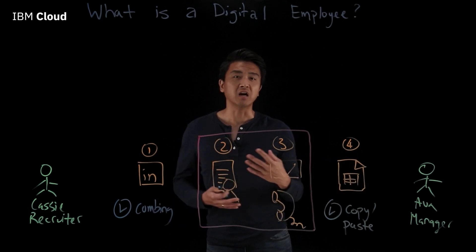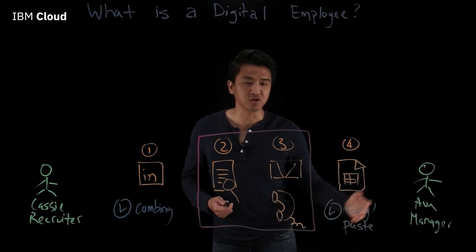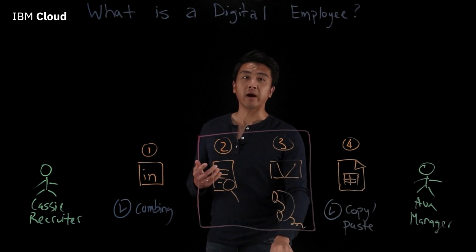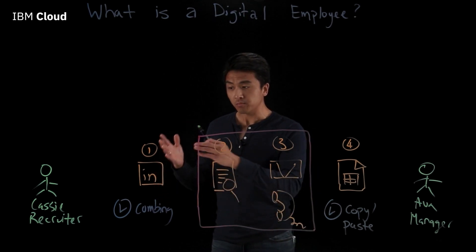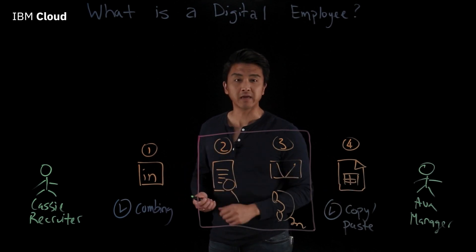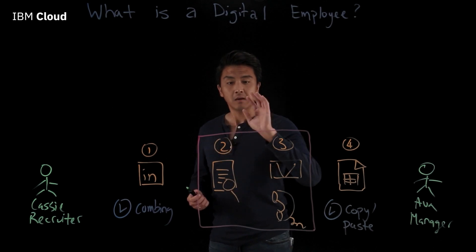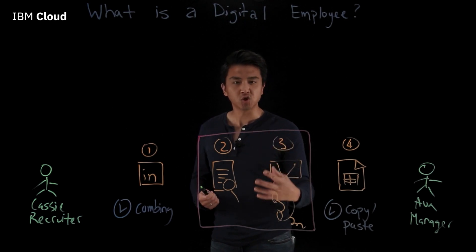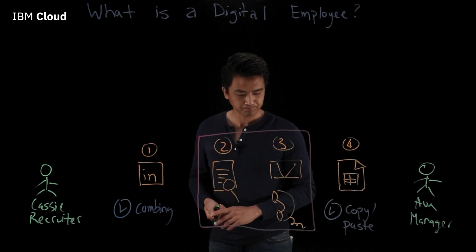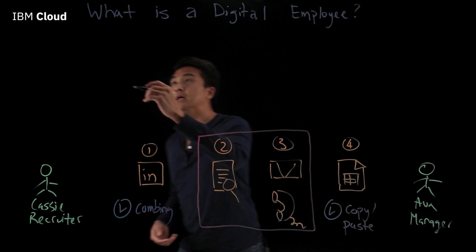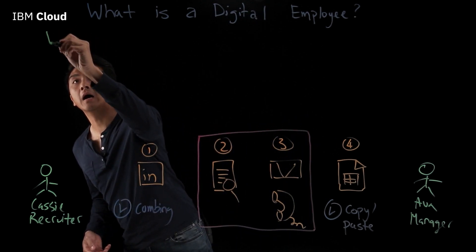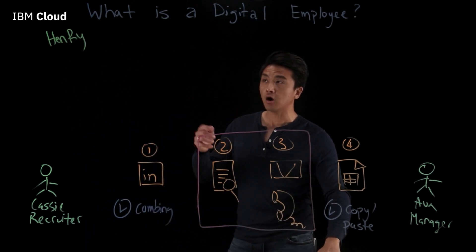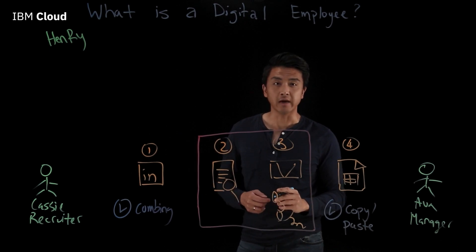She also spends a lot of her time on administrative tasks like messaging Ava, messaging the candidates, and scheduling time with the candidates. Wouldn't it be great if Cassie had her own personal helper to handle these manual tasks, so that she can focus on higher-value tasks that really require human skills, intuition, and analysis? This is where the digital employee comes in. I'd like you to meet Henry. Henry is an HR digital employee and Cassie's new sidekick.